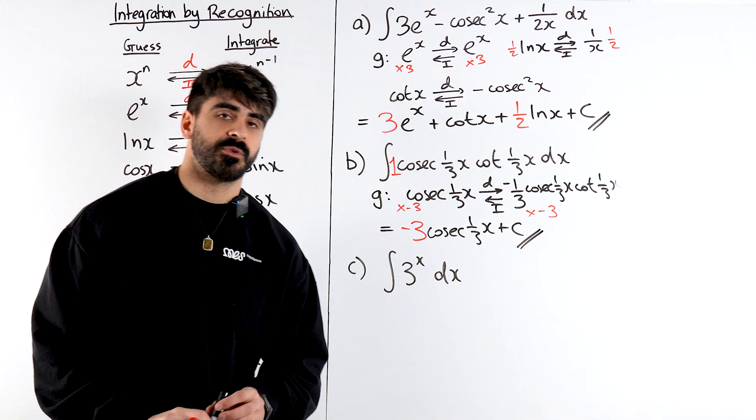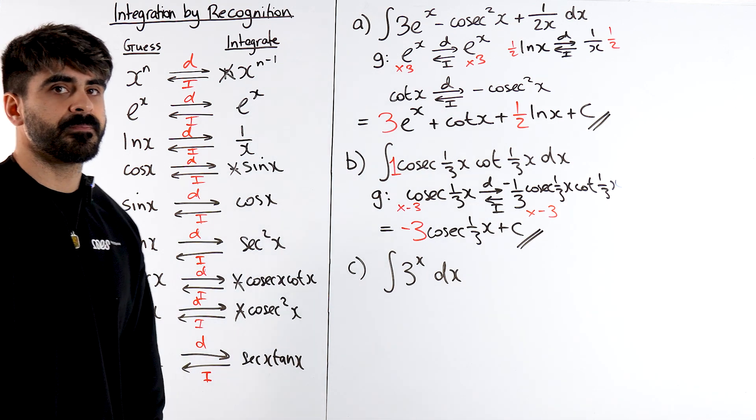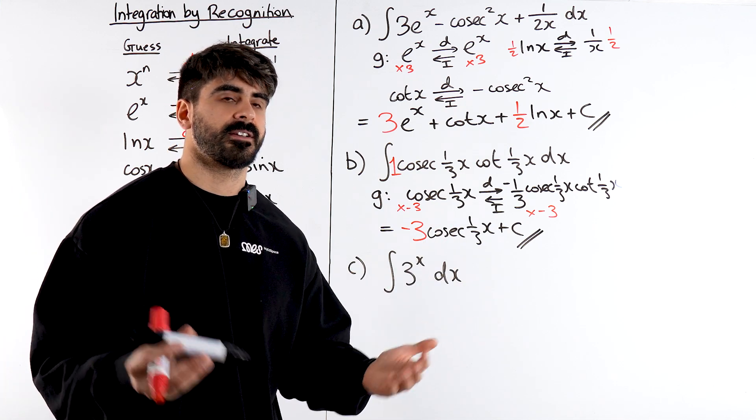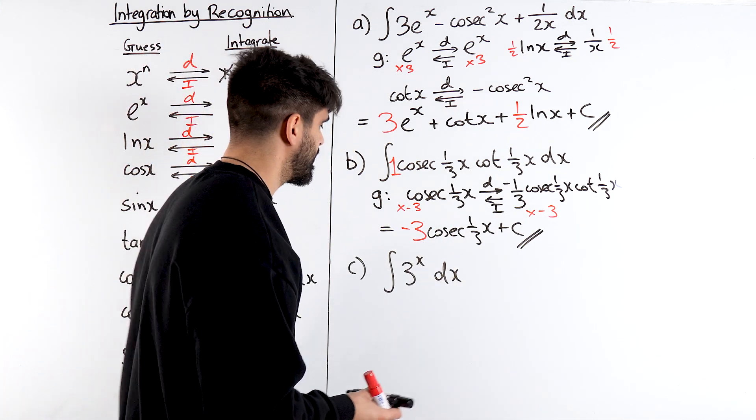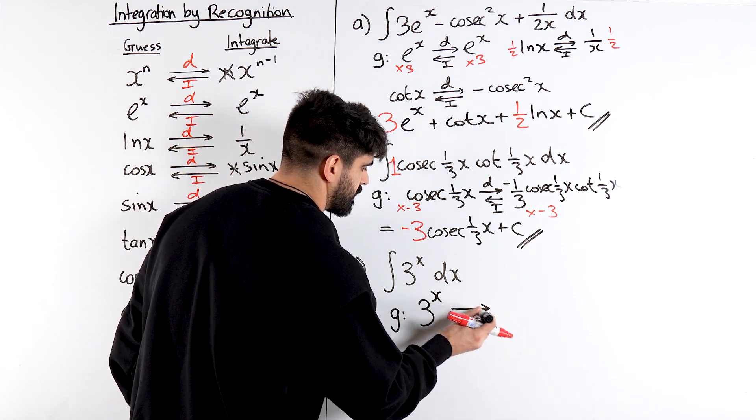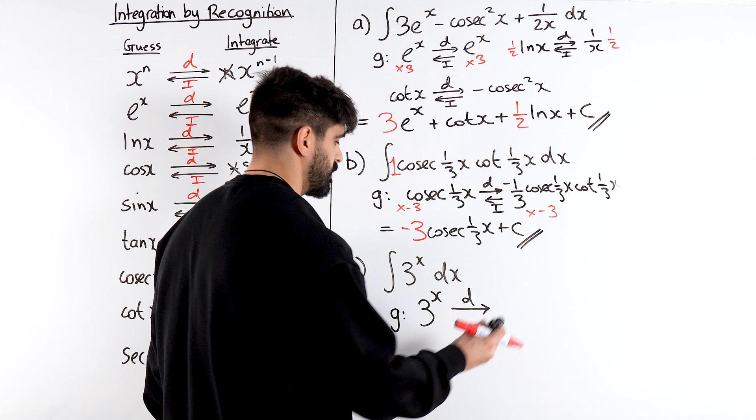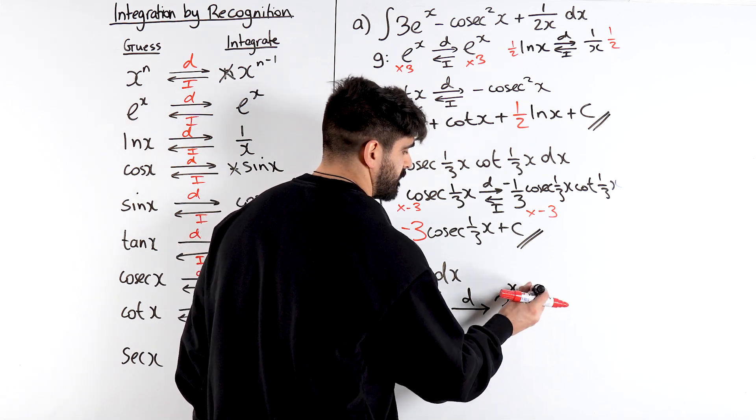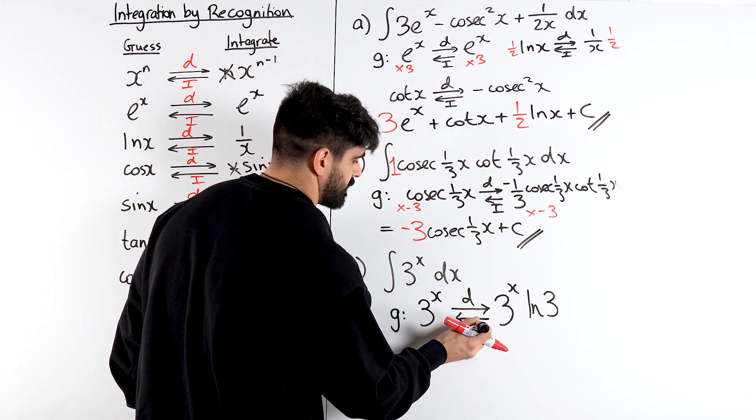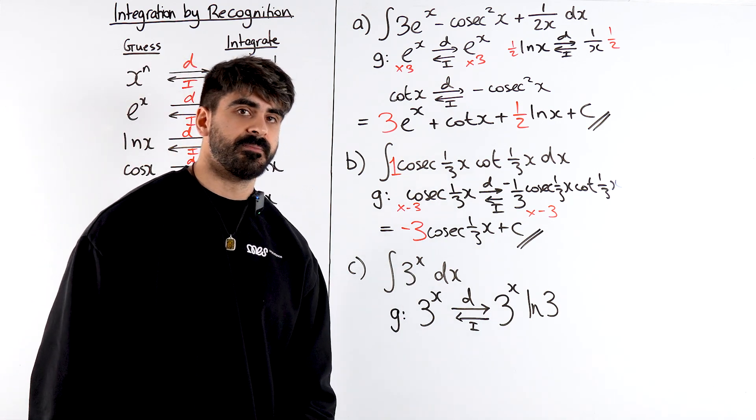Final one. The integral of 3 to the power of x. I've not spoken about 3 to the power of x. But what is it the most like? It's like our exponentials. It is an exponential just like e to the x. So just like the same with e to the power of x, my guess is that it's going to stay the same. So my guess is 3 to the power of x. But now I differentiate to see what happens. 3 to the power of x differentiates to itself just like e to the x. But then you have to ln the base. So ln 3. Which means this integrates back to this.